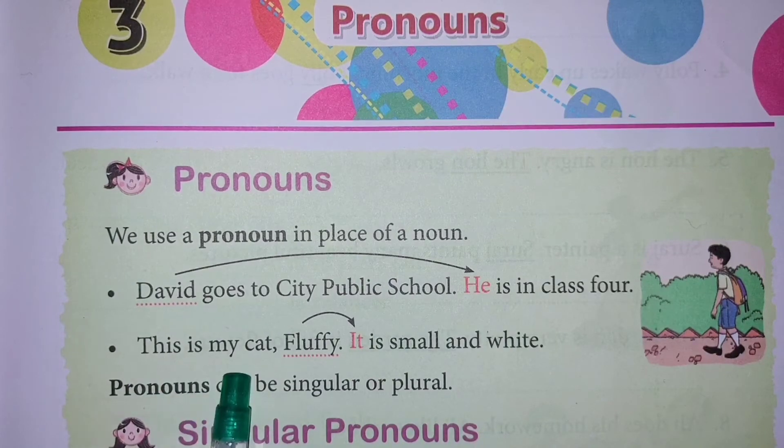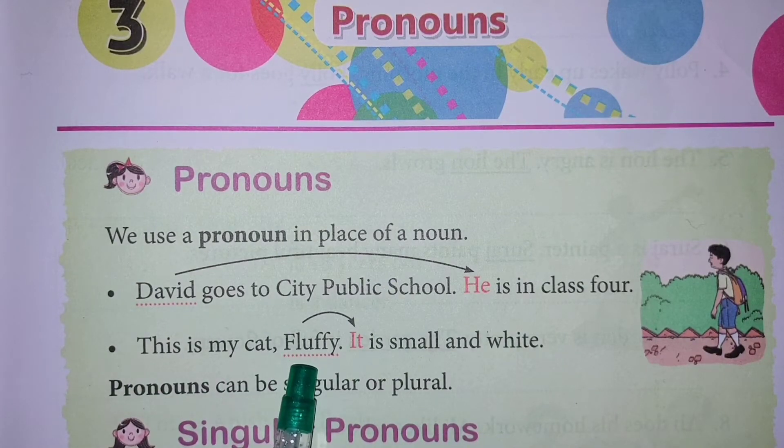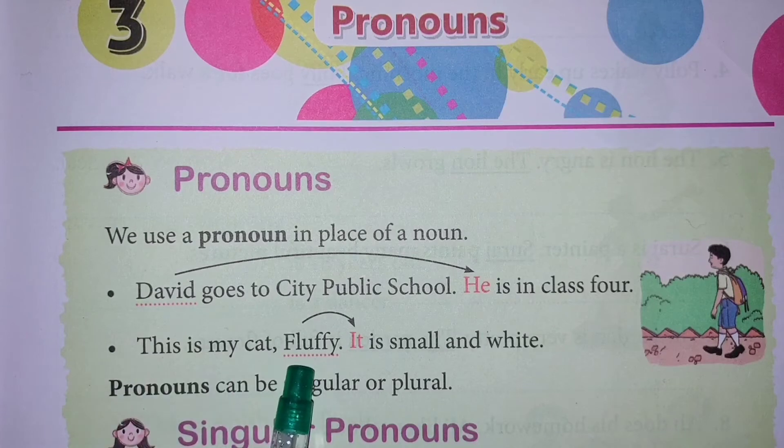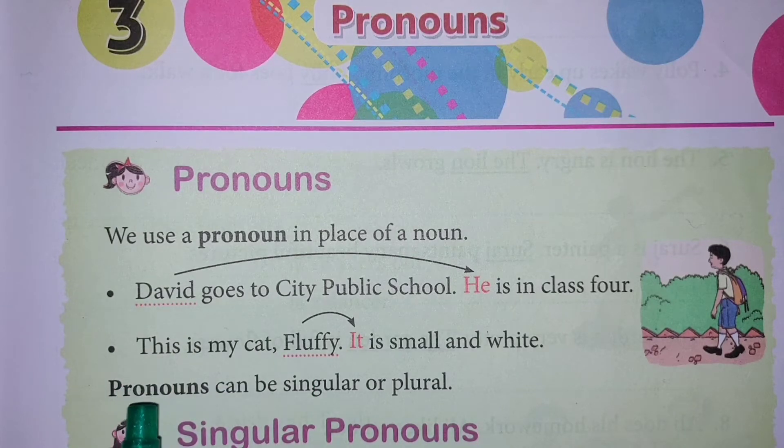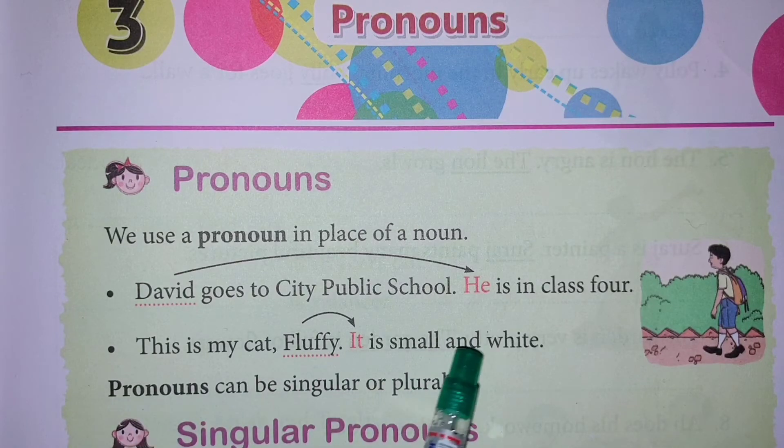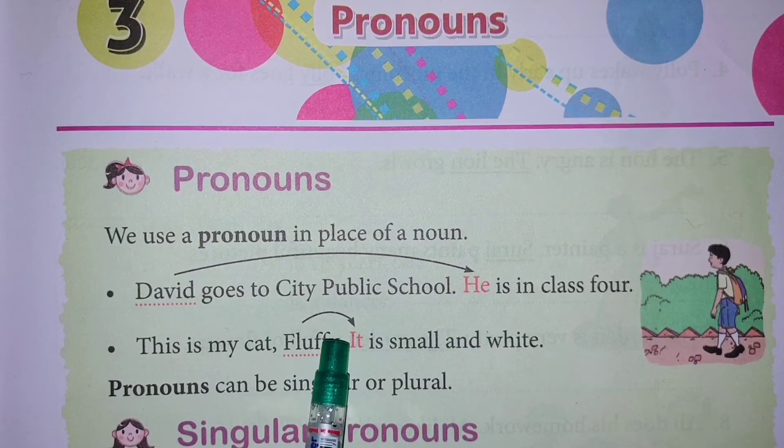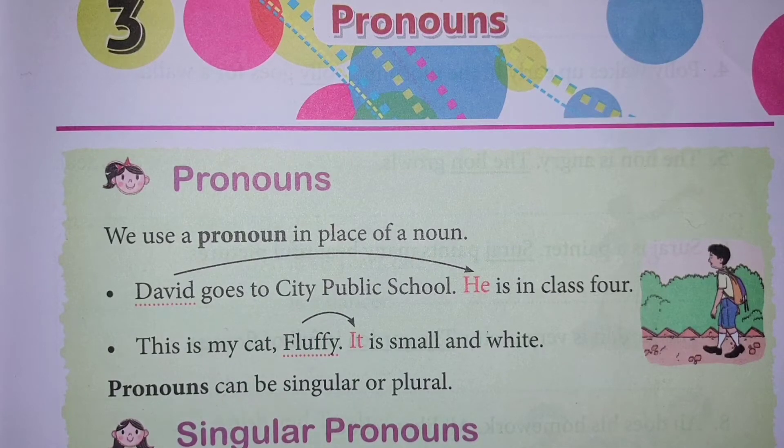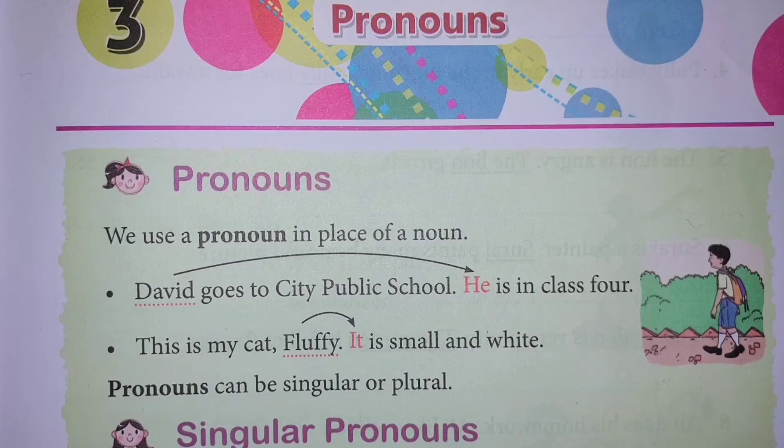This is my cat Fluffy. It is small and white. For animals we use the pronoun it. It is small and white.